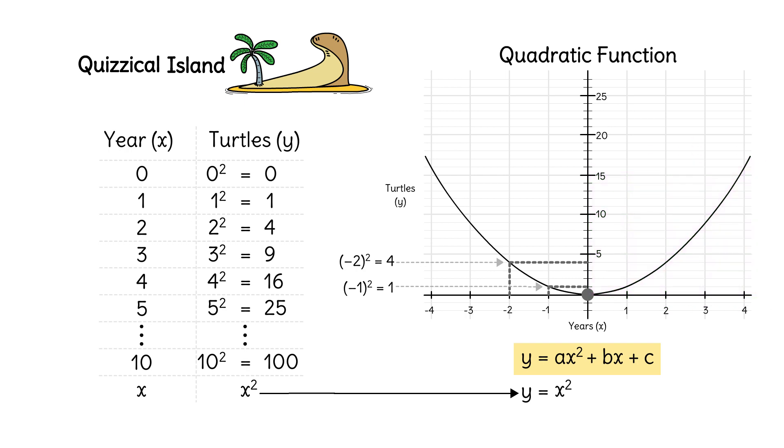A quadratic function is great for modeling the growth of turtles on quizzical islands starting at year zero. Quadratic functions model scenarios with constant acceleration.